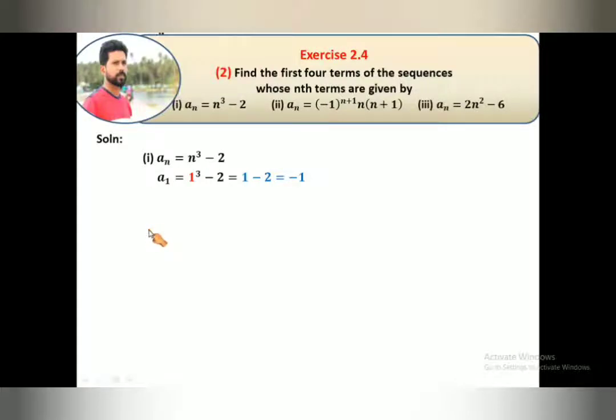Similarly, find out the second term also. So a₂ = n³ - 2. 2³ value is 8, 8 minus 2 equals 6.